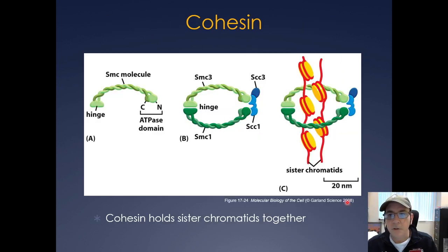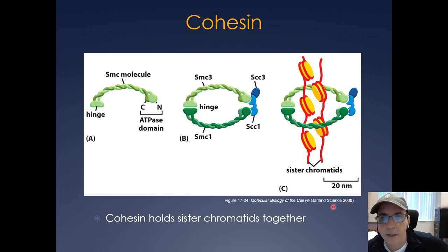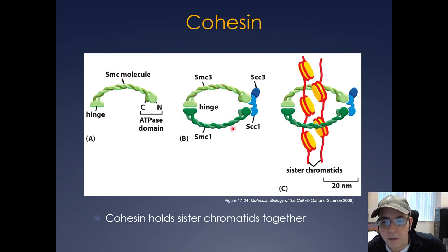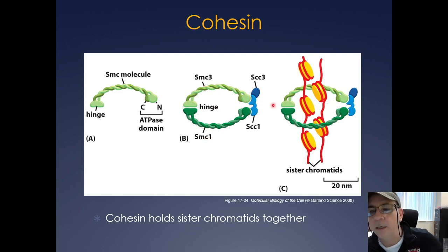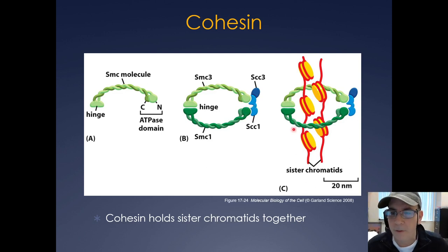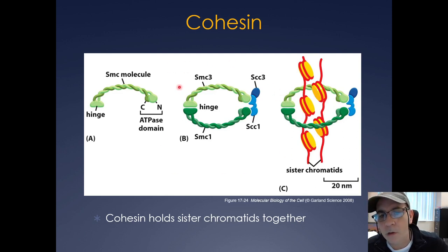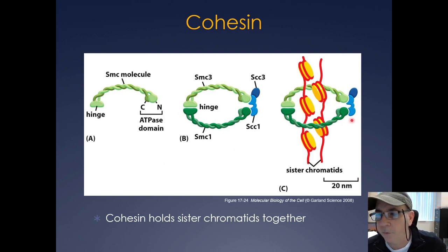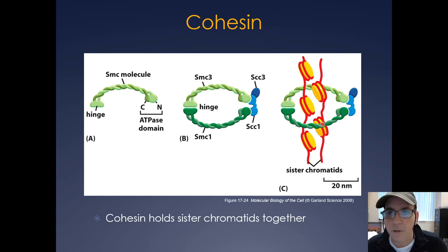After the DNA has been replicated, you need to hold the sister chromatids together, and this is done by cohesin. The cohesin complex contains the SMC molecule — which has a coiled-coil domain and a hinge region — specifically SMC1 and SMC3, plus a couple of other proteins (SSC1 and SSC3) that hold it together. These create a little loop that holds the sister chromatids together. You don't need to know all the exact names in the cohesin complex, but know that cohesin holds the sister chromatids together — we'll see why that's important in the next part of today's lecture.